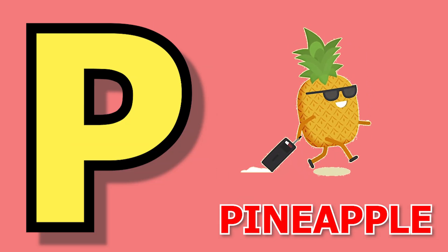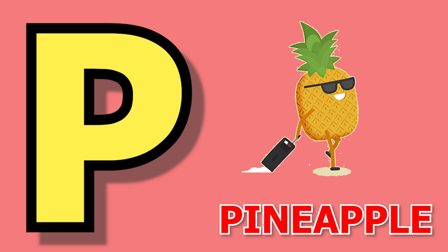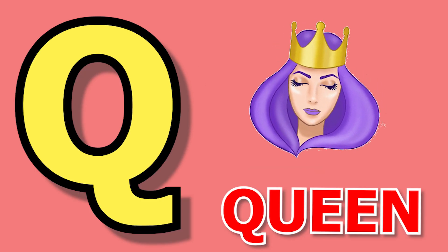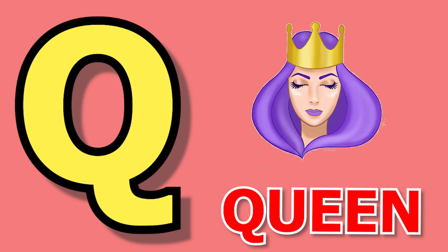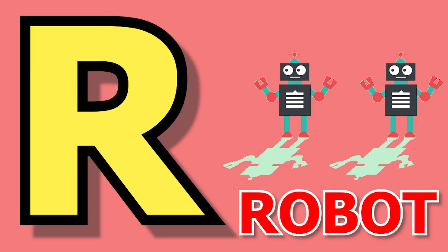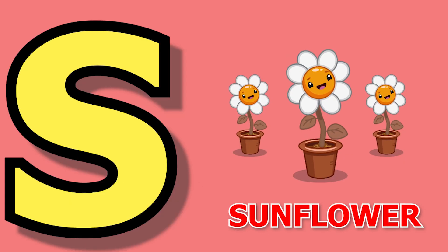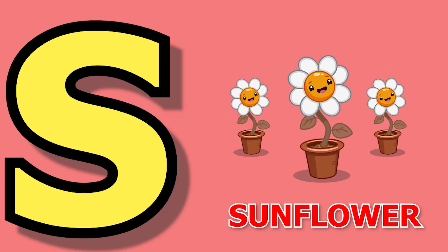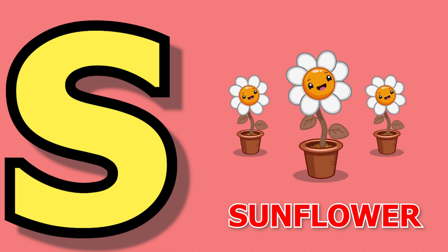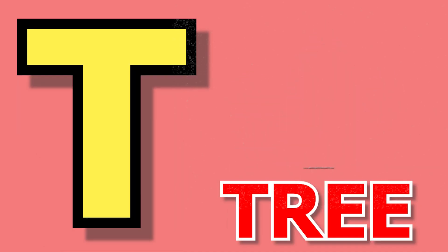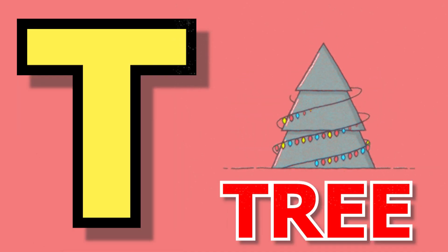Q for queen, queen means rani. R for robot, robot means robot. S for sunflower, sunflower means suraj mukhi. T for tree, tree means spade.